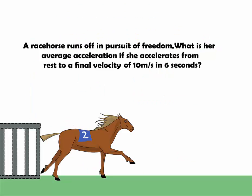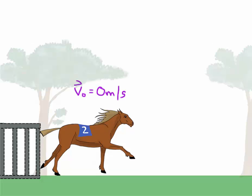Now let's consider an example. A racehorse runs off in pursuit of freedom. What is her average acceleration if she accelerates from rest to a final velocity of 10 meters per second in 6 seconds? Let's visualize the situation.